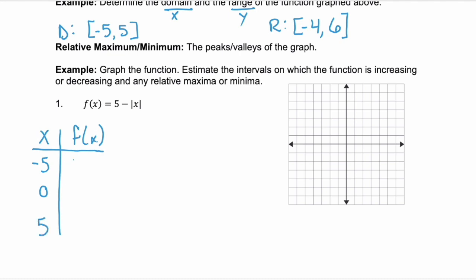Let's pick negative 5, 0, and 5. When we plug negative 5 in, we get 5 minus the absolute of negative 5, or 5 minus 5, which is 0. This is the point negative 5, 0, we're right here. And when we substitute 0 in, we have 5 minus the absolute value of 0, which is just 5. So that's the point 0, 5.